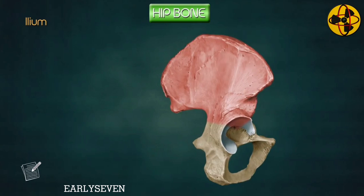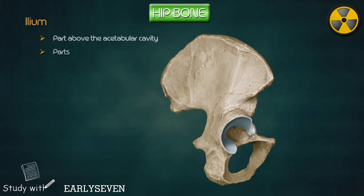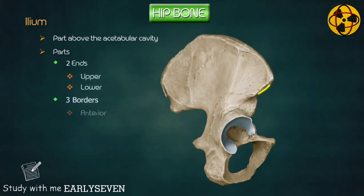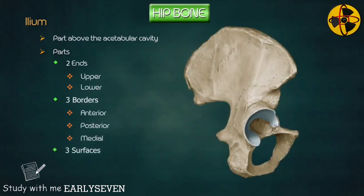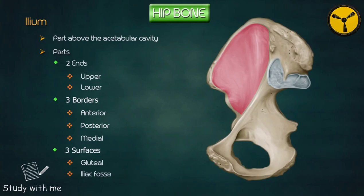Ilium. It is the flat, expanded part above the acetabular cavity. It has the following parts: two ends, upper and lower; three borders — anterior, posterior, and medial; and three surfaces — gluteal, iliac fossa, and pelvic.